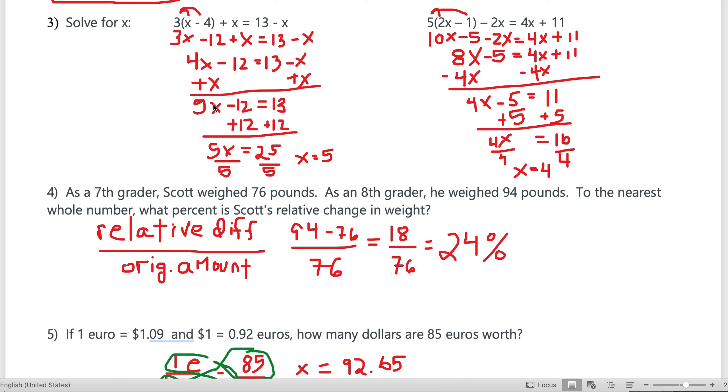Number three is to solve these two equations. Generally speaking, we did very well on these on our last test, so I'm confident you'll do well again. Distributing the 3: 3x - 12 + x = 13 - x. Since these x's are on the same side, same operation: combine like terms.